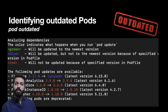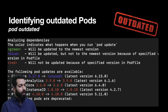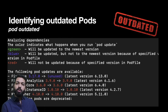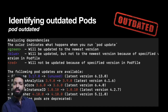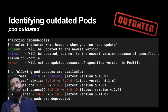In the pod outdated output, pods shown in green will be immediately updated to the latest version when you run pod update for them. Those shown in blue will be updated but not to the latest version, because you have explicitly mentioned a version in the Podfile. And those shown in red will not be updated at all because of the version constraint mentioned in the Podfile.